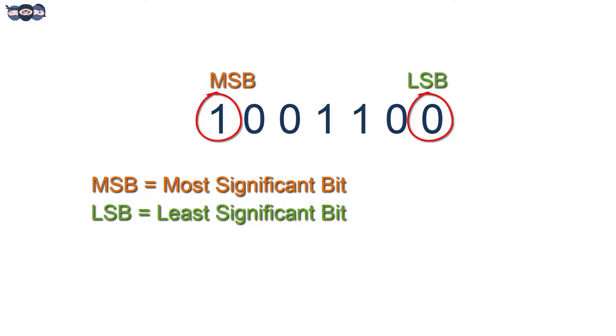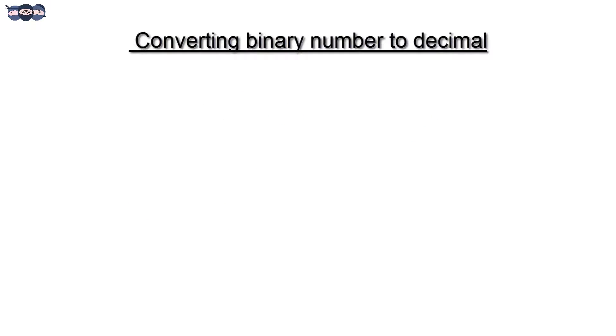In any binary number, the leftmost bit is called the MSB, that is the most significant bit. And the rightmost bit is called the LSB, least significant bit. We have already seen how to convert binary numbers into decimal in the first video.